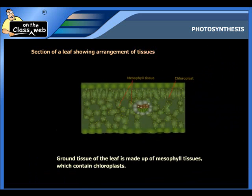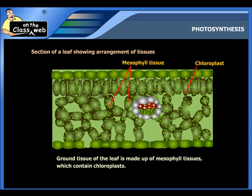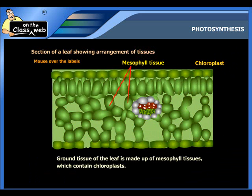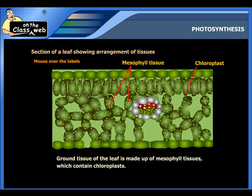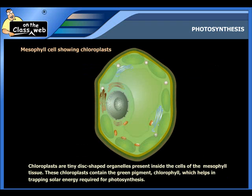The cross section of a leaf shows that its ground tissue is made up of mesophyll tissues which contain chloroplasts. The chloroplasts present in the mesophyll tissues are tiny disc-shaped organelles. These chloroplasts contain the green pigment called chlorophyll, which helps in trapping the solar energy that is required for photosynthesis.